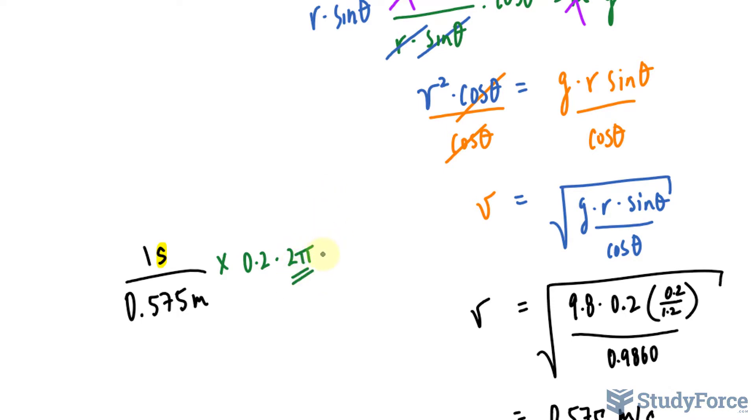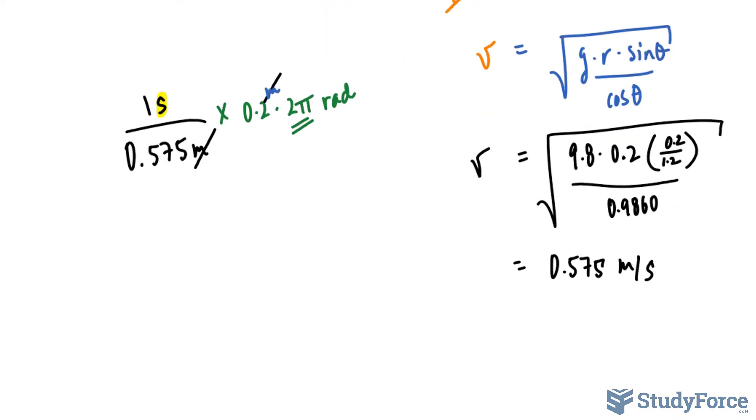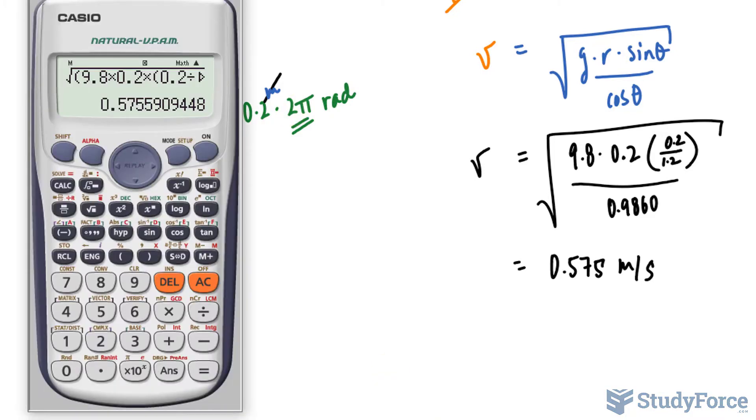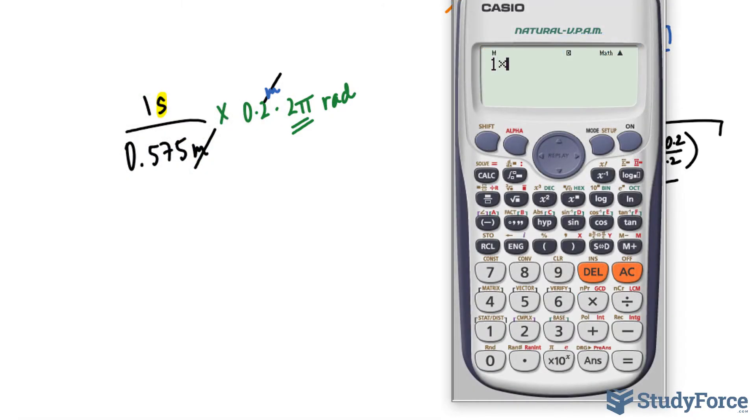I can multiply that now by the radius of 0.2 times 2 pi. 2 pi being how many radians there are in a circle. 0.2 is represented by the unit's meters. And both these meter units will cancel out, leaving you with seconds and radians. But radians, you don't need to write down the unit. It's not necessary. So we have 1 times 0.2 times 2 pi, that's the top part of the fraction.